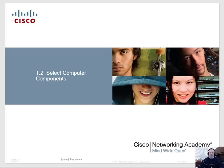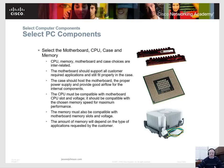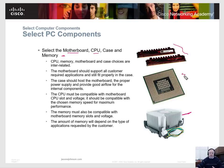When selecting computer components, you need to select the motherboard, CPU, case, and memory at the same time, because the CPU and heat sink and case all go together. You need to make sure you have a motherboard that fits the right case, that the memory fits the motherboard, and that the CPU fits the correct socket on the motherboard. Usually you buy your CPU and heat sink as a package deal — I would recommend always buying the proper heat sink that goes with your CPU rather than a third-party one.